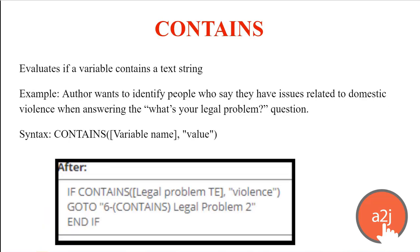Contains is a relatively new function. It evaluates if a variable contains a specific text string. For example, if an author wants to identify people who say they have issues related to domestic violence when answering a general 'what's your legal problem' question, you can search a variable for a text string value. If the legal problem TE variable contains the word 'violence', you take them to a follow-up question about that issue. The syntax is: contains, parentheses, bracket, name of the variable, close bracket, comma, then the word or phrase in quotes, close parentheses.